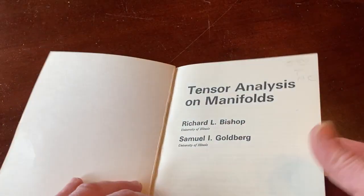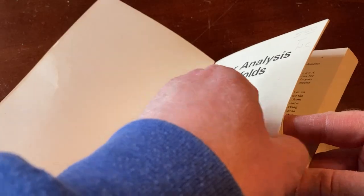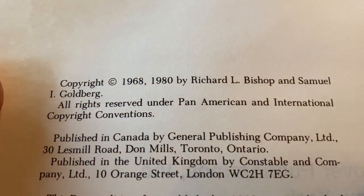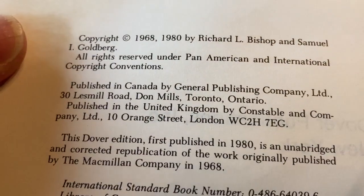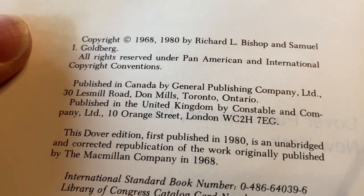This is a Dover book, meaning it was published by Dover Publications. It's a reprint of a very old book. Let's see if we can find the original copyright. It looks like 1968 was the original one, and this one was reprinted in 1980.